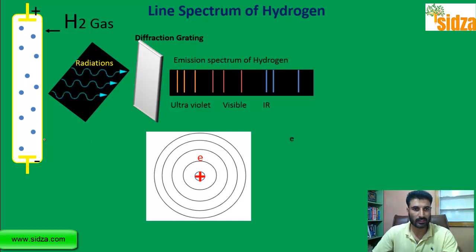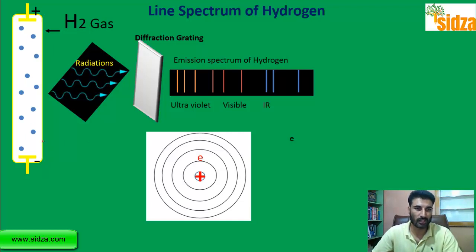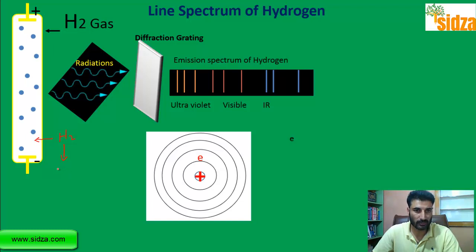The hydrogen gas that we take in a discharge tube — when we pass electric discharge, we are basically dissociating the hydrogen gas into atoms using electrical energy. So the hydrogen molecule actually dissociates into atomic state. The H₂ molecule dissociates into hydrogen atoms by the electrical energy.